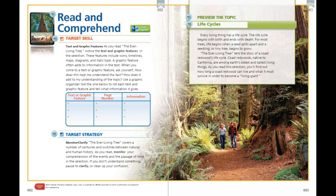One way to clarify something is to reread the selection slowly and think about the main idea it may contain. Let's preview the topic: every living thing has a life cycle. The life cycle begins with birth and ends with death. For most trees, life begins when a seed splits apart and a seedling or tiny tree begins to grow. The Ever-Living Tree tells the story of a coast redwood's life cycle. Coast redwoods, native to California, are among Earth's oldest and tallest living things.